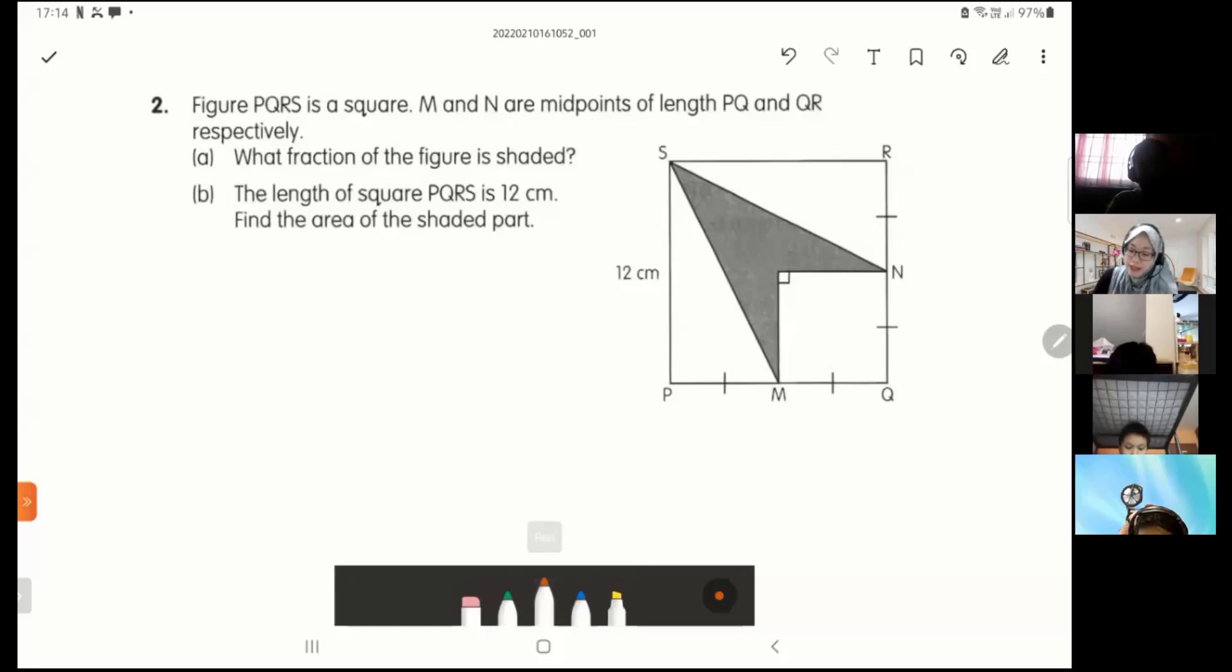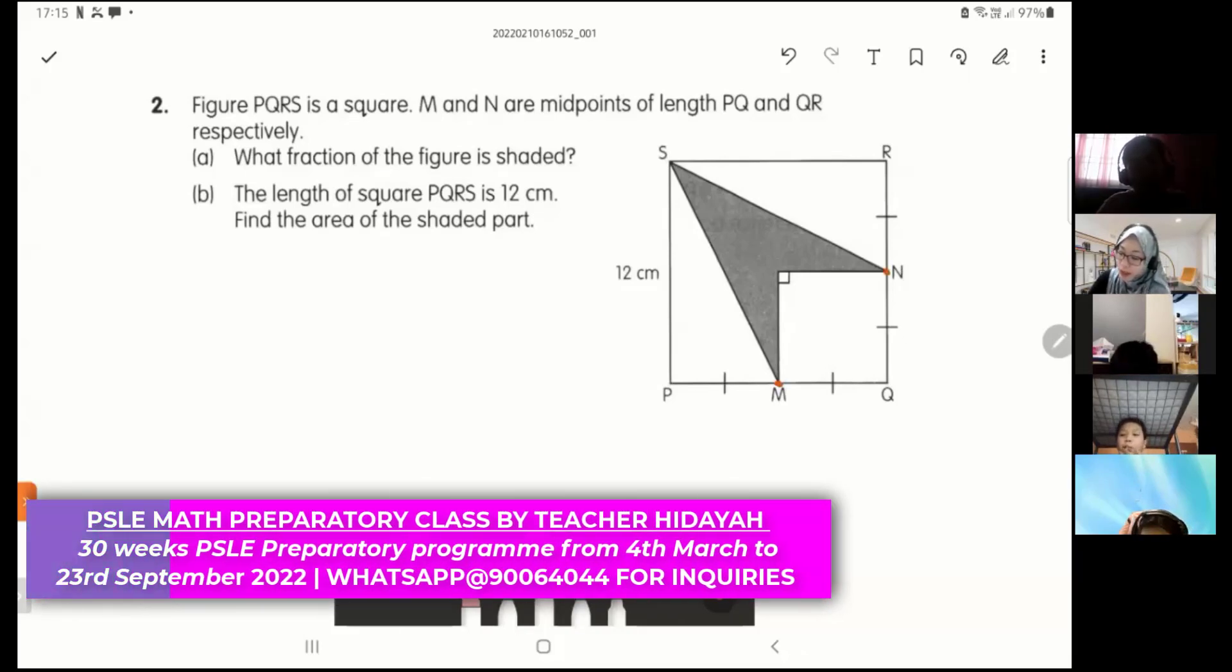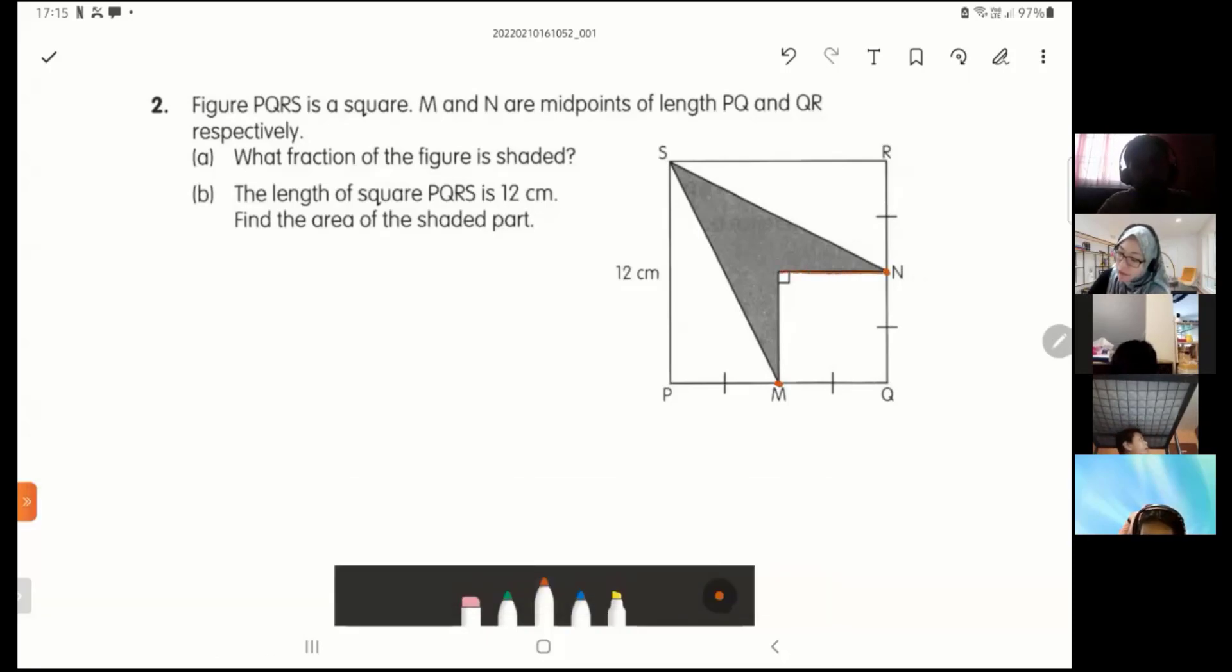So figure P, Q, R, S is a square. You can see the big square. Then M and N are midpoints. You can see that M and N. M is the middle point of P and Q, and N is the middle point of Q and R. Midpoint. So whatever is in the middle of the line here is half of R and Q. This red color line here is half of P and Q. That's what I'm trying to say.